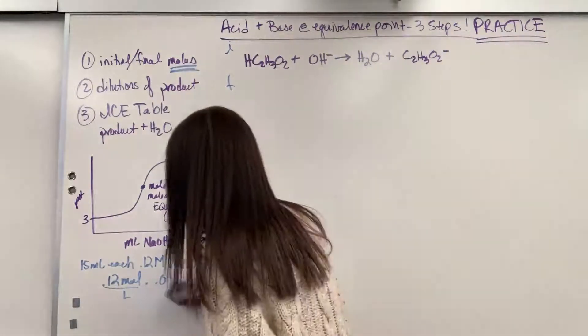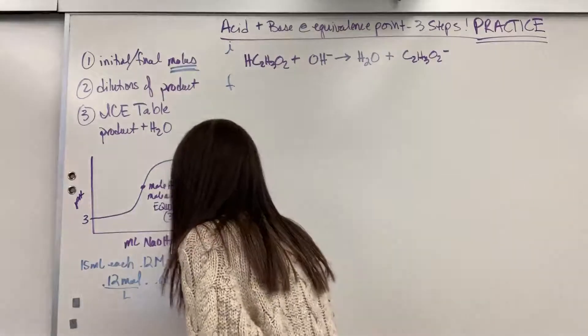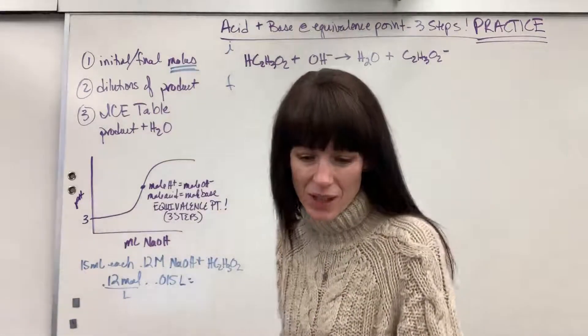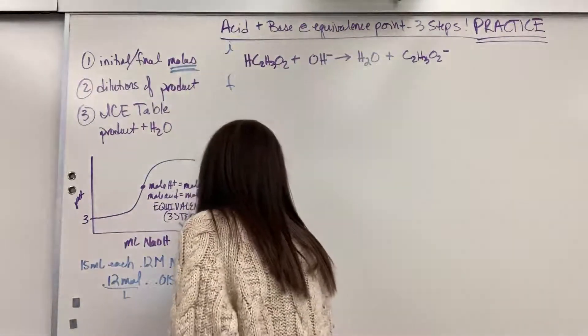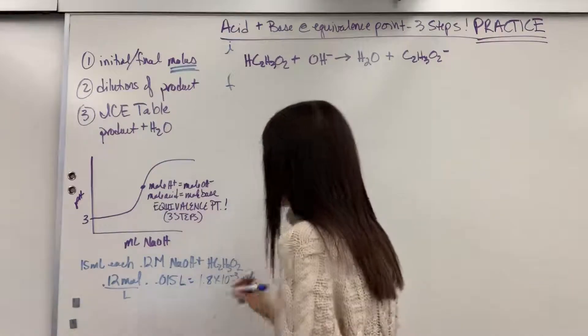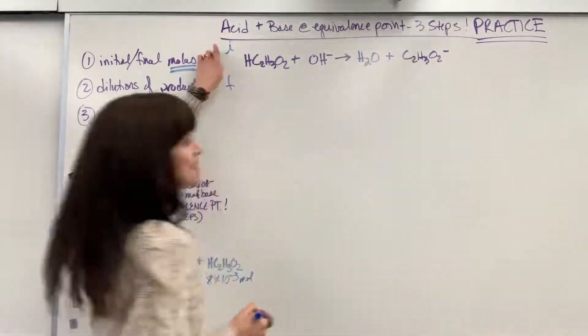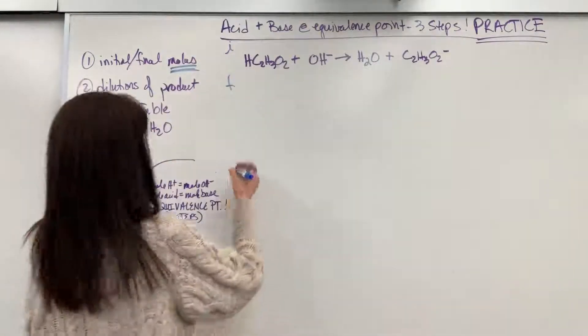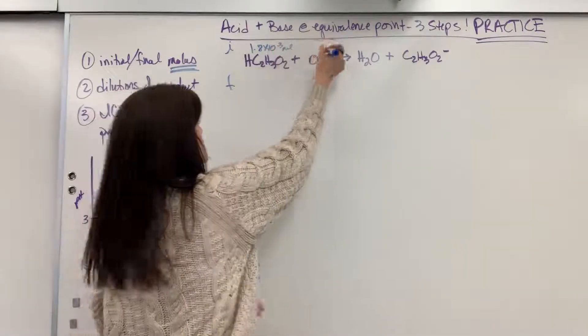So what I did was I set this up. Our molarity for each of these is 0.12 moles per liter. We are given a volume of 0.015 liters. It's 15 mils. So I just divided by a thousand and got the liters. We multiply and that is going to give us 1.8 times 10 to the minus 3 moles. So that's how many moles I have of each of these species to react.